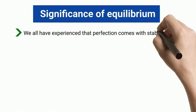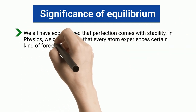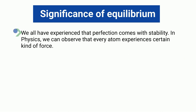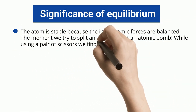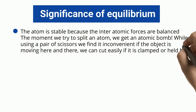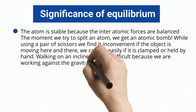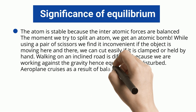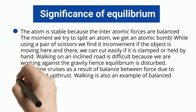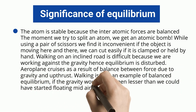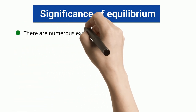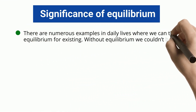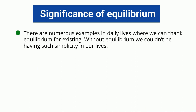Perfection comes with stability. Every atom experiences certain forces, and the atom is stable because the interatomic forces are balanced — the moment we try to split an atom, we get an atomic bomb. Using scissors is easier when the object is clamped or held. Walking on an inclined road is difficult because we work against gravity. An airplane cruises due to balance between gravity and upthrust. Walking itself is an example of balanced equilibrium — if gravity were lesser, we could start floating mid-air. There are numerous examples in daily life where equilibrium brings simplicity.